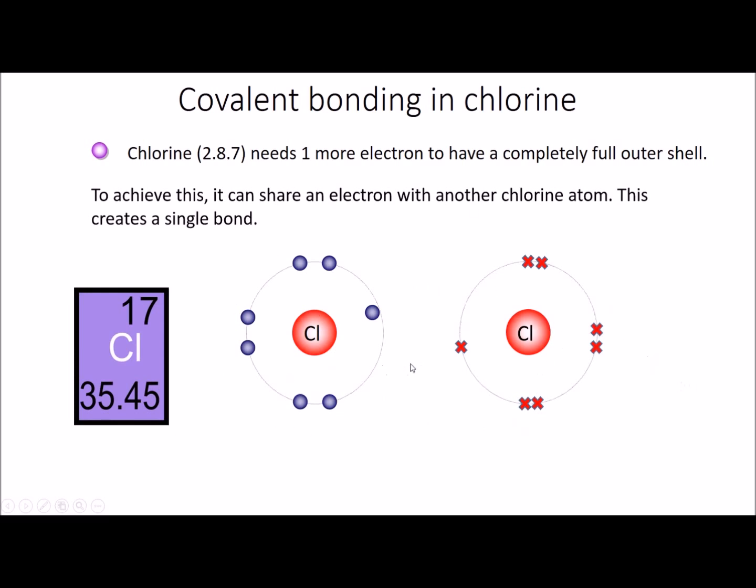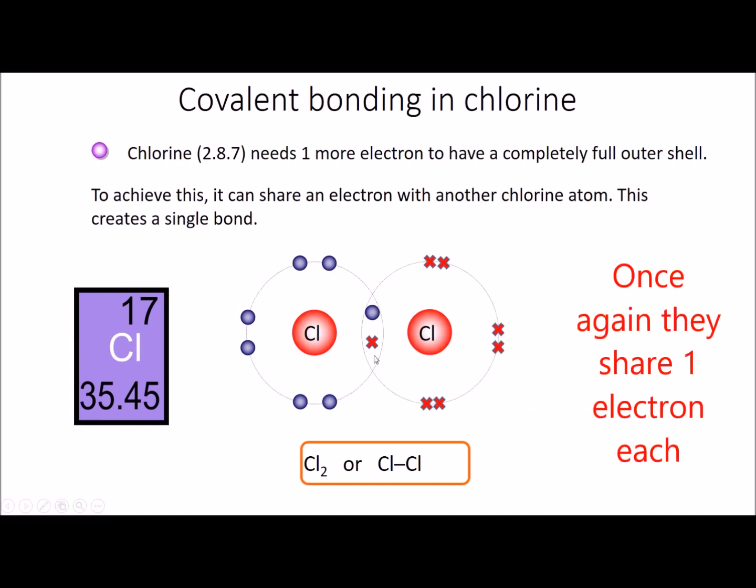So because both chlorine atoms only need one electron each to complete their shells, they form a covalent bond. So the electrons are shared as shown over here. So this means that chlorine exists in the diatomic form or the Cl2 form.